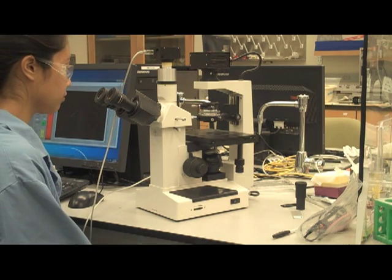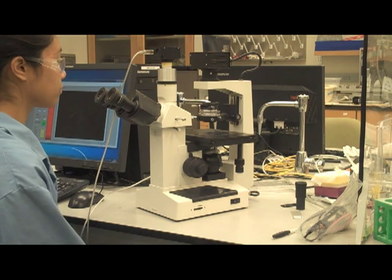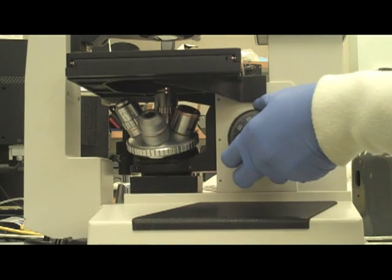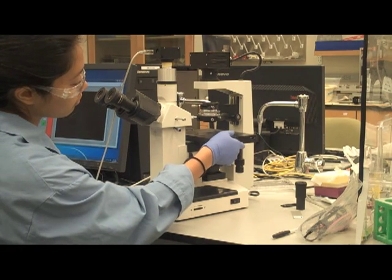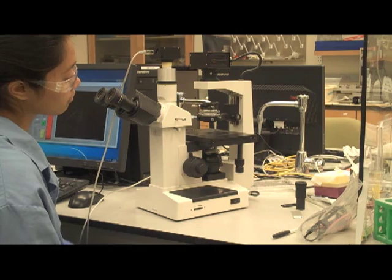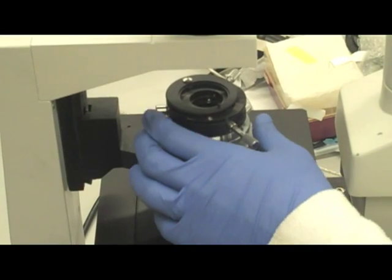Step 3: Slowly turn the coarse focusing knob until the working objective has moved all the way to the top, just underneath the stage of the microscope. Position the stage so that the objective lens is aligned with the opening on the stage.